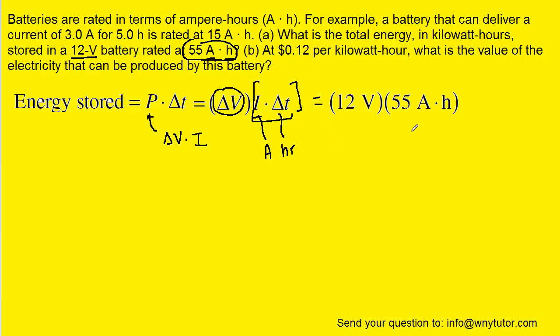So we can make that substitution. So here is the potential of the battery, and again, here is the I times delta T term, which was given to us as 55. So we can perform this multiplication and we get 660.